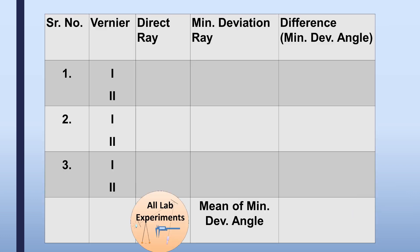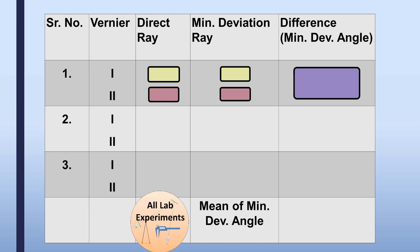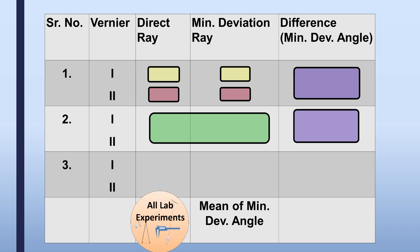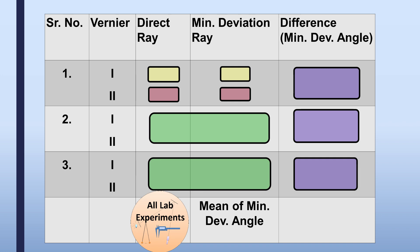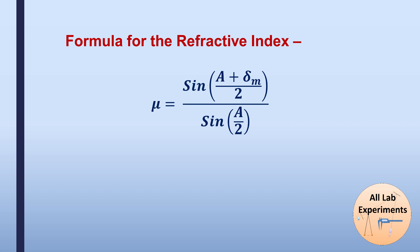We set the cross wire on this light at minimum deviation and record its position from vernier scale one and two. In our table, we record the position of the direct ray and the deviated ray from both vernier scales, then find their difference — which gives the angle of minimum deviation. For better accuracy, we change the vernier scale positions and repeat the experiment two more times, then take the average. Now with both the angle of prism and the angle of minimum deviation, we can use the formula to calculate the refractive index.